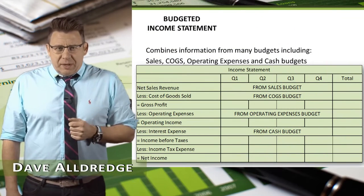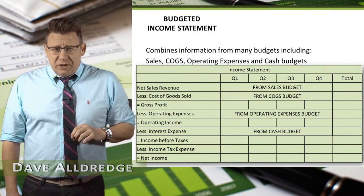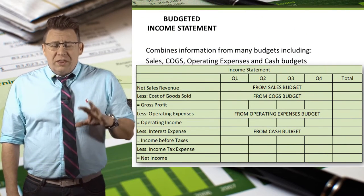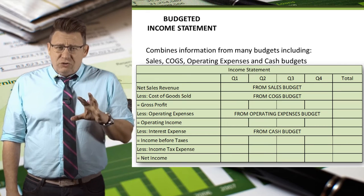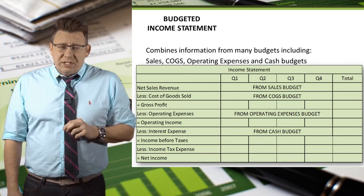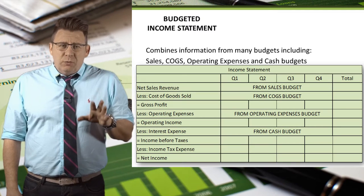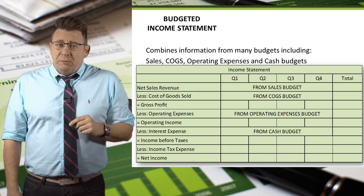The Budgeted Income Statement, which is either the last operating budget or one of the first financial budgets, depending on which book you are referencing, is created with data from other budgets.